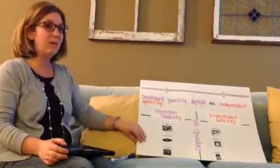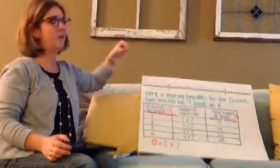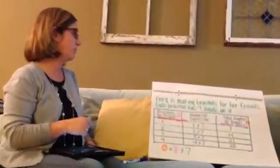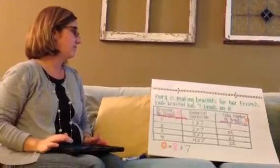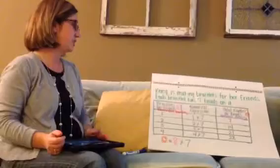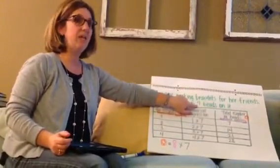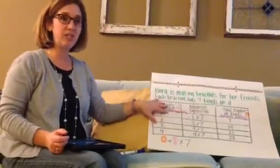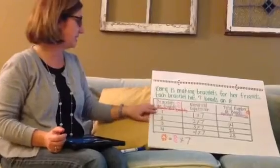Let's use independent and dependent quantities to make some equations. Equations can be hard to make, but we're going to work on it together. Here's an example: Kira is making bracelets for her friends. Each bracelet has seven beads on it. One bracelet has seven beads. We can put this information into a table, which helps us see the relationship much easier.